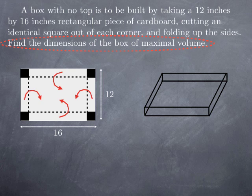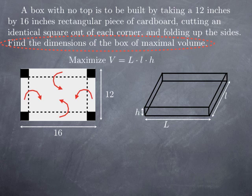Because we look for the dimensions, of course I'm going to introduce letters for them. Let's call these dimensions capital L, little l, and h. And we want to maximize the volume, which in the case of this type of box would be just a product of the dimensions. So capital L times little l times h.